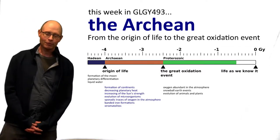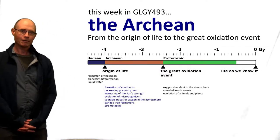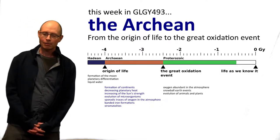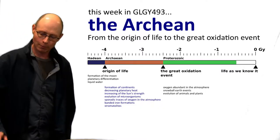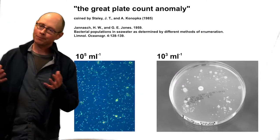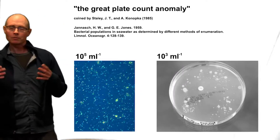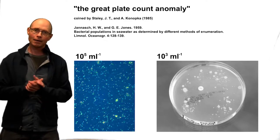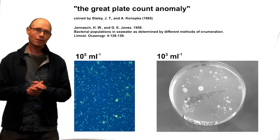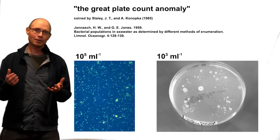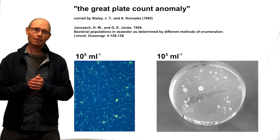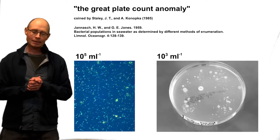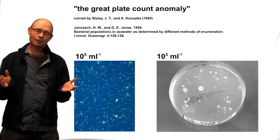From the origin of life to the great oxidation event, episode 3. Last episode I discussed that there are about 1 to 2 million different species of bacteria and archaea on Earth, but we've only studied 0.1% of that — about a thousand — and that is actually a problem.